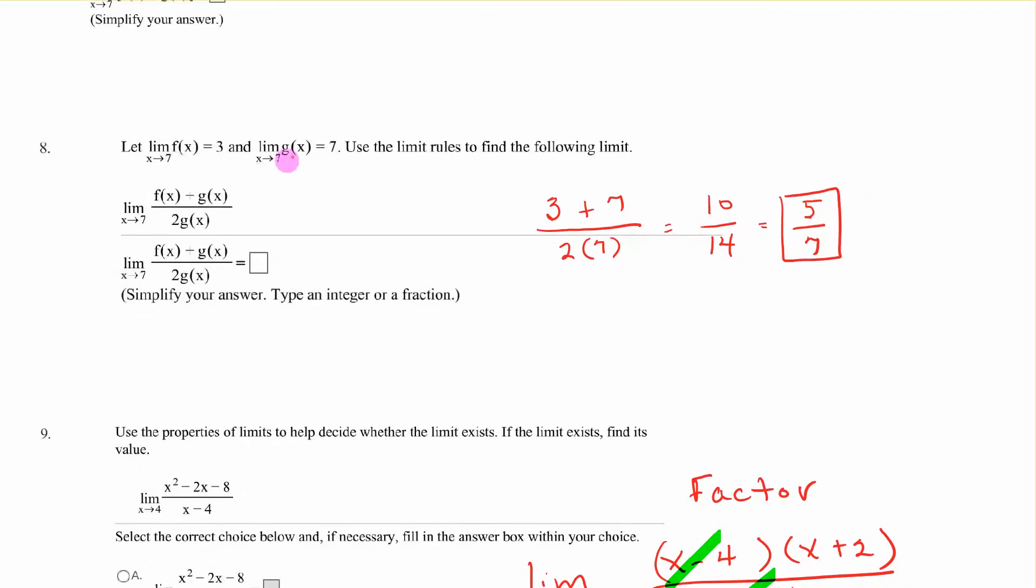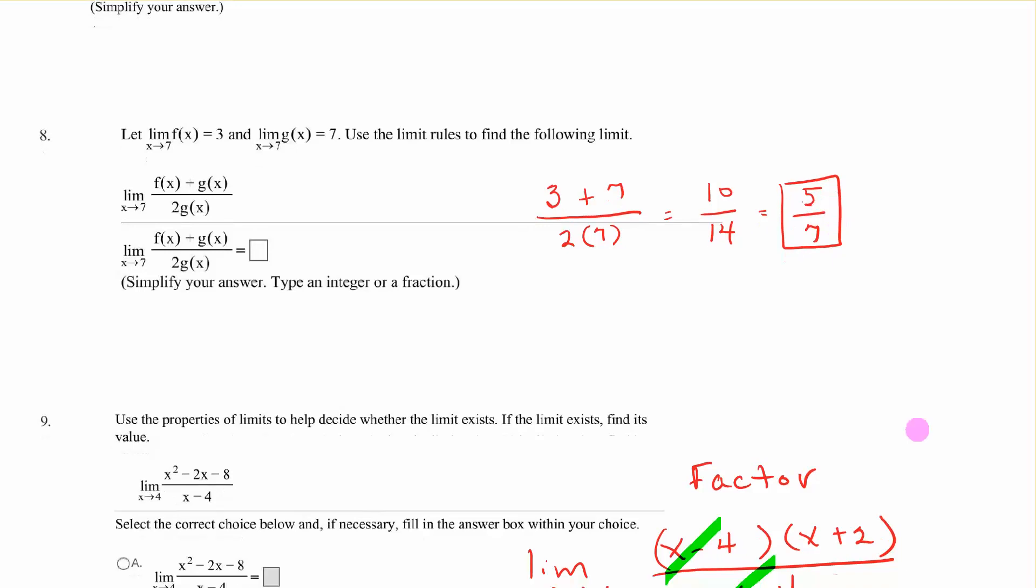This gives us f of x and g of x. So we have that limit as 3. This limit is 7. If we add them on top, and then on the bottom, we do 2 of g of x, we get 2 times 7. So we have 10 over 14, which is 5 over 7.